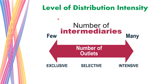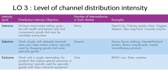Next is learning objective number three: the level of distribution intensity. There are three levels: intensive, exclusive, and selective. When discussing the number of outlets, an intensive distribution strategy means many intermediaries and many sellers involved, while the opposite extreme — exclusive distribution intensity — means very few outlets. Selective distribution intensity falls in the middle of these two.